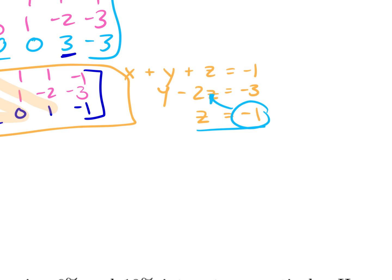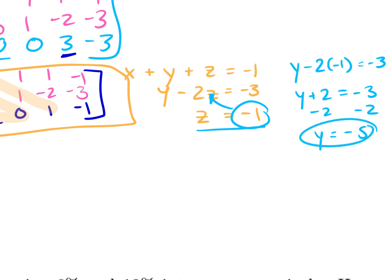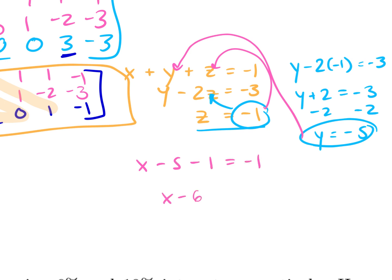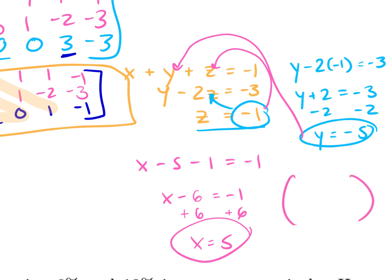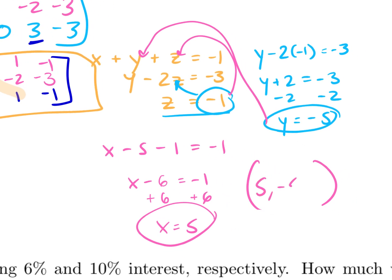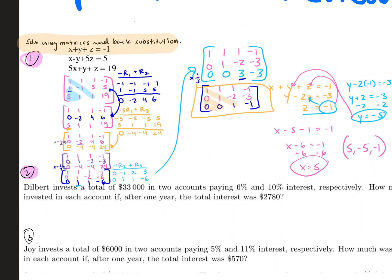Since z equals negative one, plug it into the second equation: y minus two times negative one equals negative three, so y plus two equals negative three, therefore y equals negative five. Then plug y and z into the first equation: x minus five minus one equals negative one, so x minus six equals negative one, and x equals five. Final answer: (five, negative five, negative one).